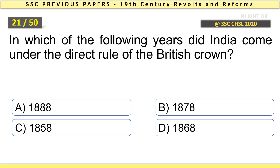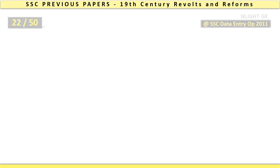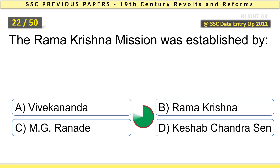In which of the following years did India come under the direct rule of the British Crown? In 1858. The Ramakrishna Mission was established by Vivekananda.